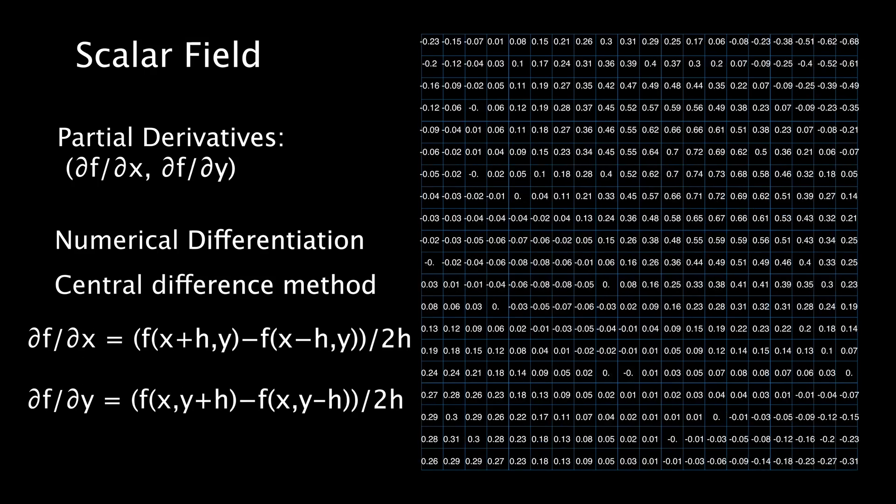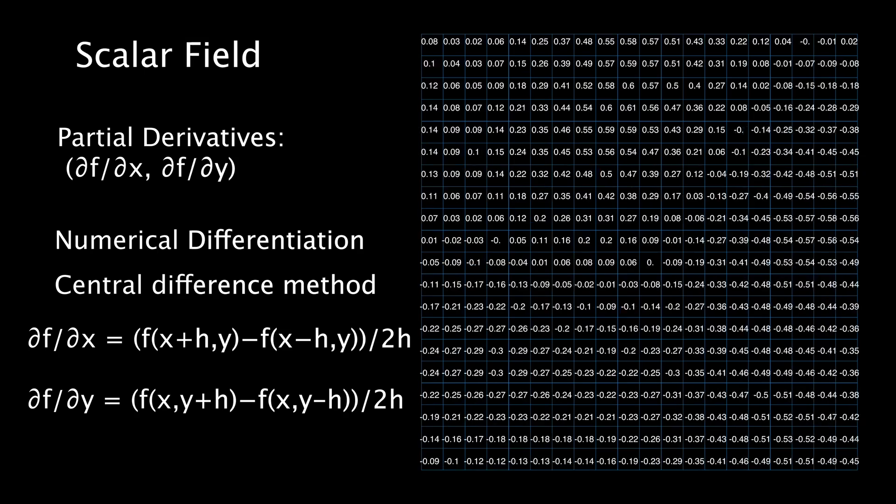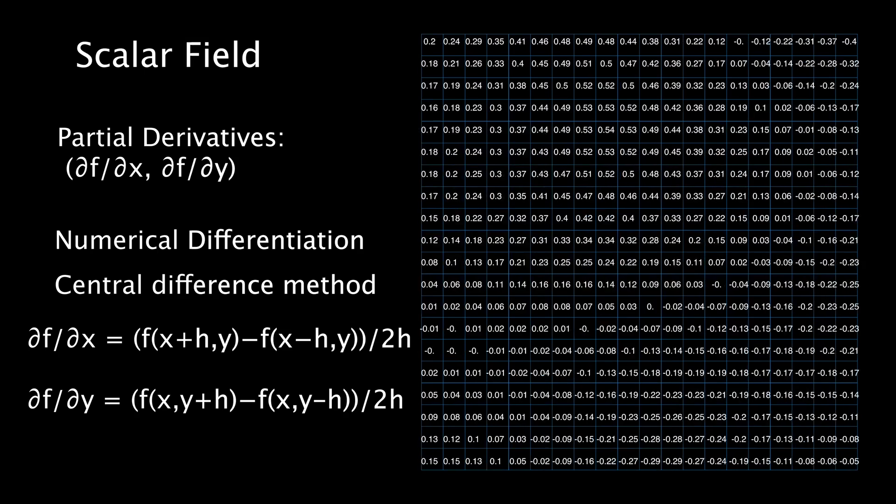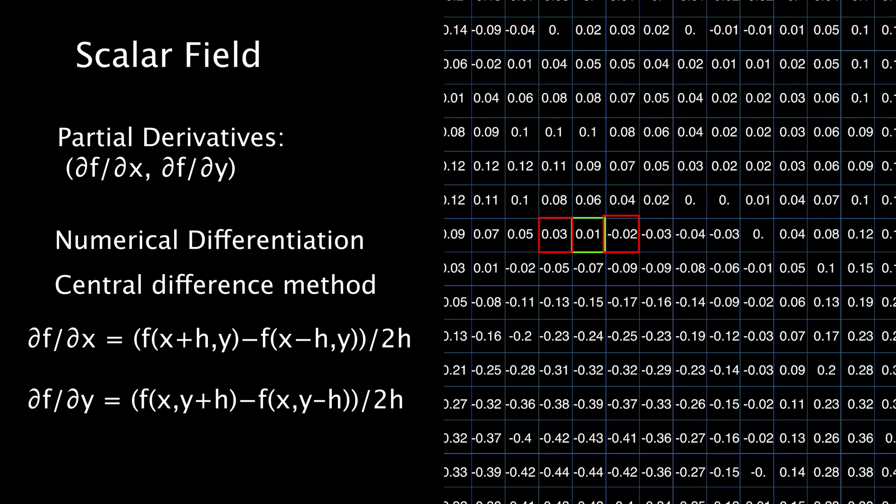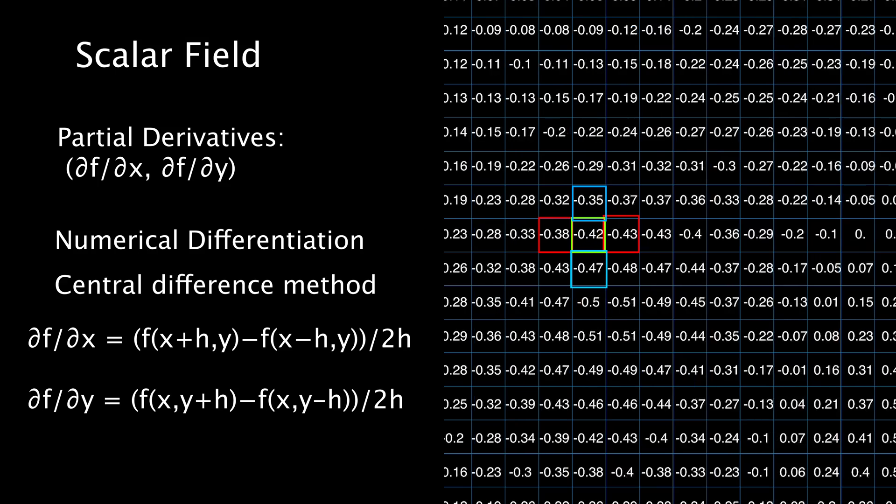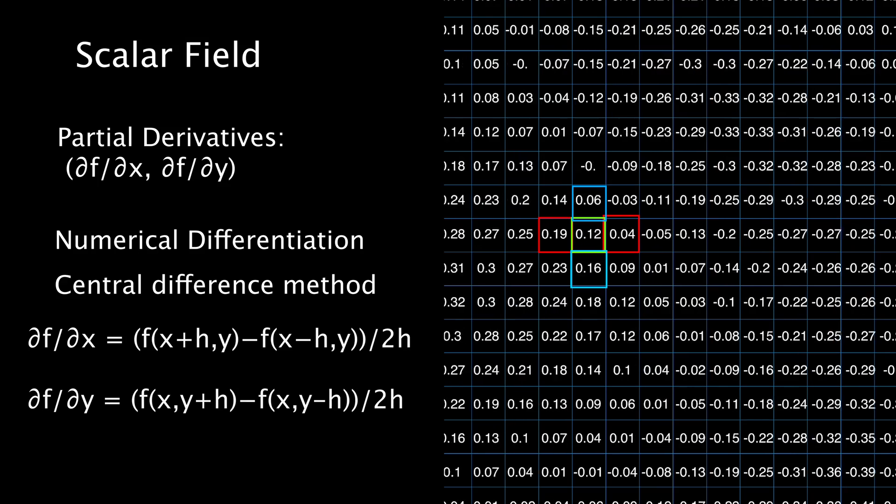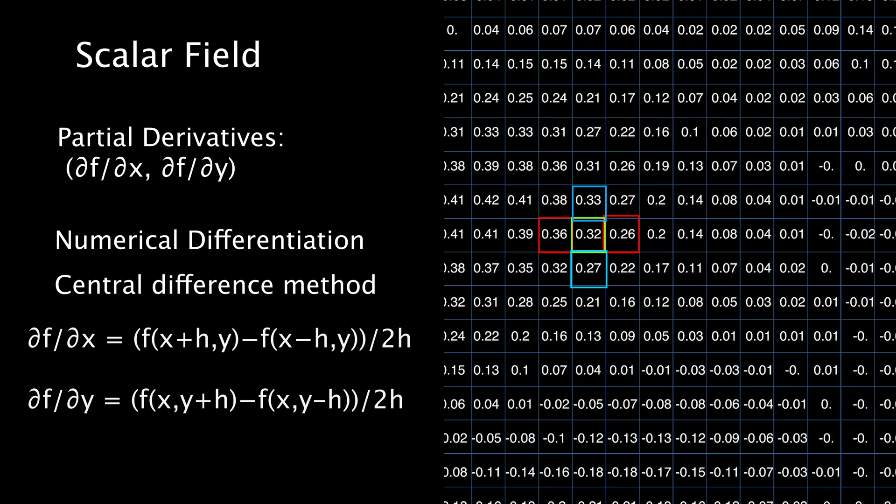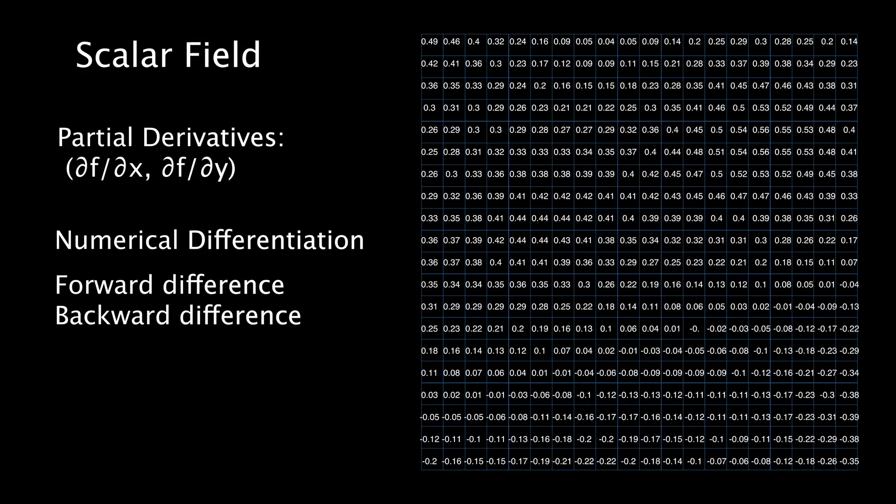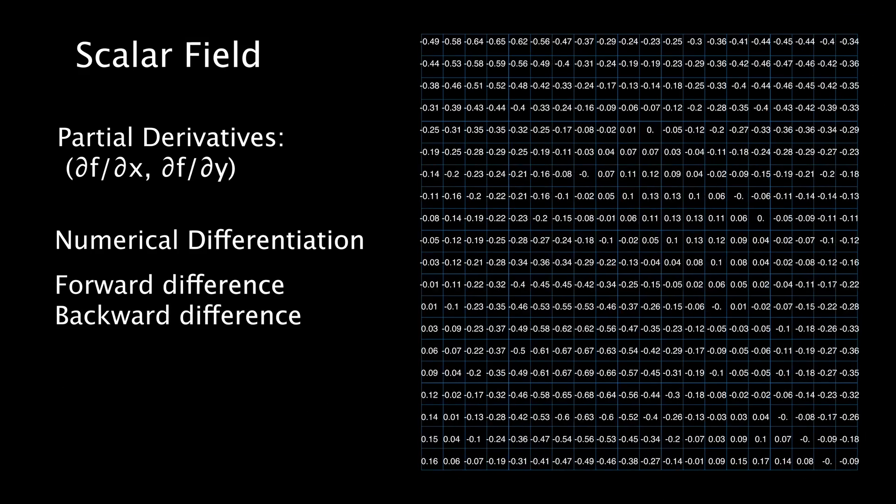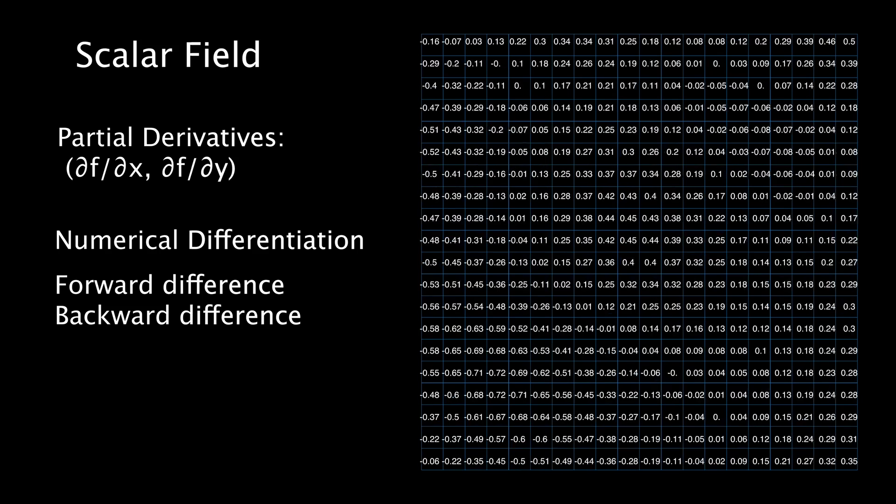We used a central difference method of numerical differentiation, which means that we took the difference between the cells before and after or above and below the current cell, and then divided by the total distance between those cells. Other possible methods are forward difference and backward difference, but the central difference method gives us the best approximation.